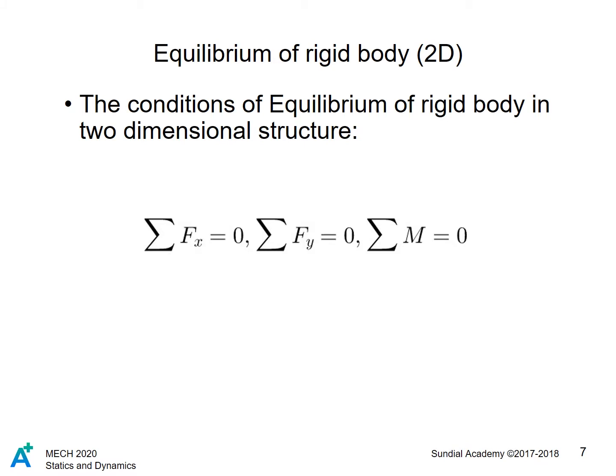Now we'll combine all the concepts we have learned so far. For the equilibrium of a rigid body, or static equilibrium, the summation of all the force and moment components in the x and y directions must equal zero.